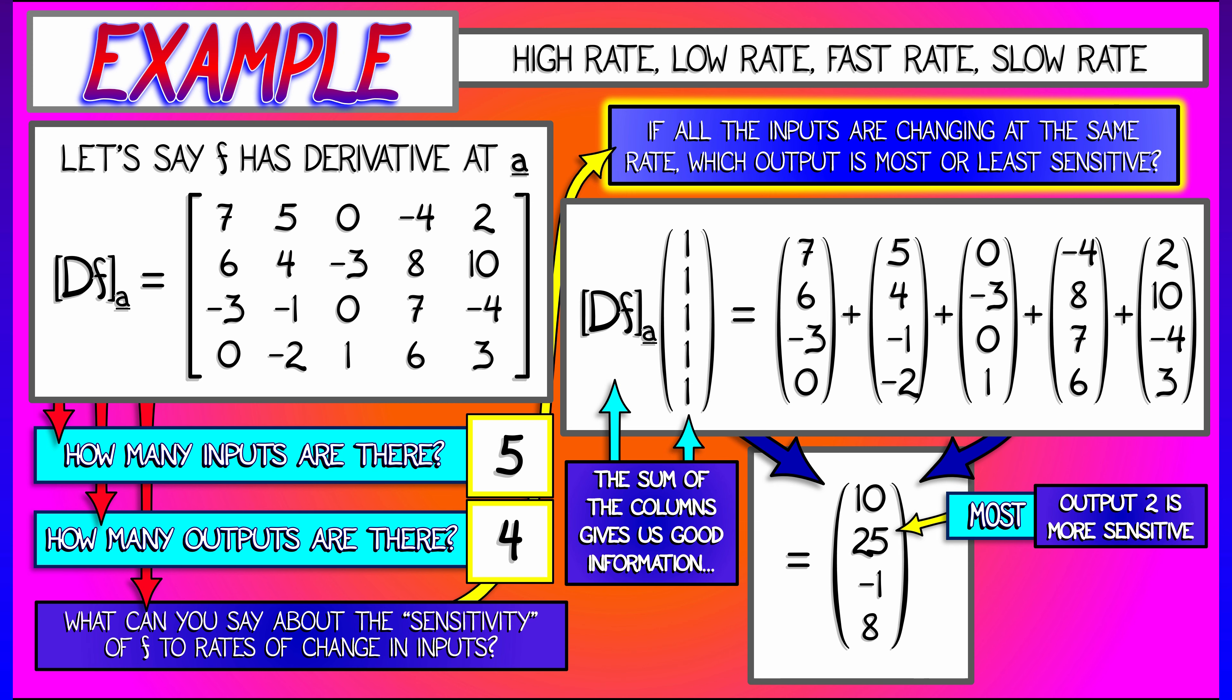So that second output is most sensitive, and that third output is least sensitive to changes. And because of the signs in front of them, we can see that their sensitivity is in opposite directions. The one is increasing, the other is decreasing, or vice versa.